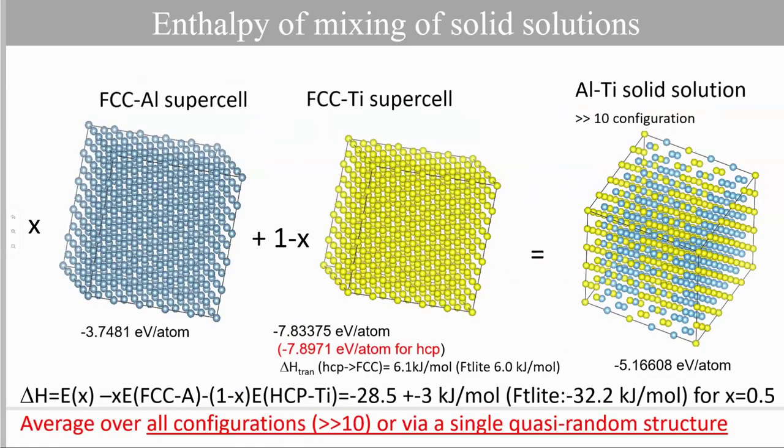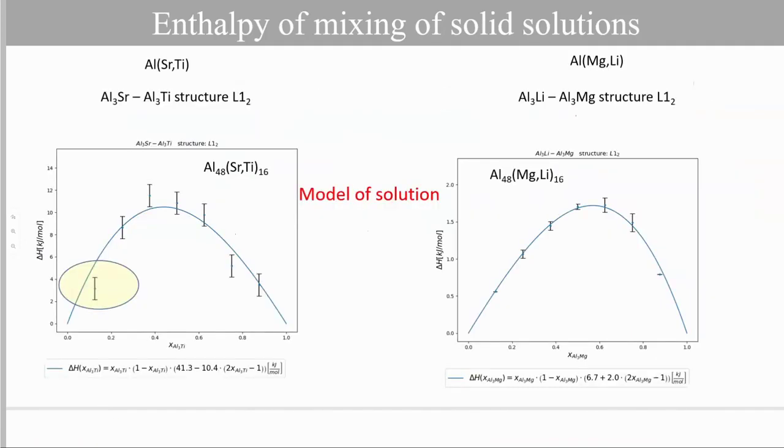For the method of calculation of the enthalpy of mixing, it's the same principle. We calculate the total energy of, for example, for aluminum-titanium solid solution. First, we calculate the total energy of aluminum supercell, then the total energy of FCC titanium supercell, and the total energy of the random configuration at the given composition. And the energy of reaction gives exactly the enthalpy of mixing. Normally, the enthalpy of mixing is obtained after the average on several configurations, but it can also be obtained on a single quasi-random structure calculation. So if we do the calculation for different compositions, we get the enthalpy of mixing curve that we can use to build our solution model in the FactSage database.